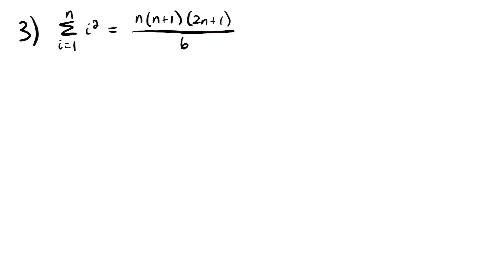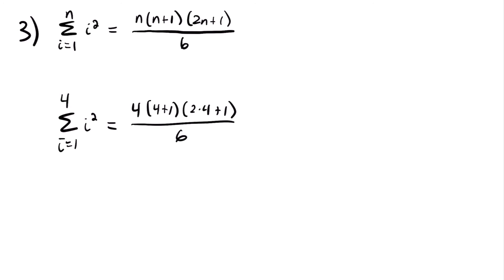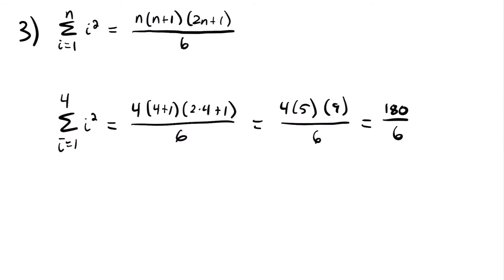For our third summation formula: the sum from i equals 1 to n of i squared equals n times the quantity n plus 1 times the quantity 2n plus 1 divided by 6. For the sum from i equals 1 to 4 of i squared, we plug in n equals 4: 4 times 4 plus 1 times 2 times 4 plus 1 divided by 6. Simplifying: 4 times 5 times 9 divided by 6, which is 20 times 9 equals 180, divided by 6 equals 30.